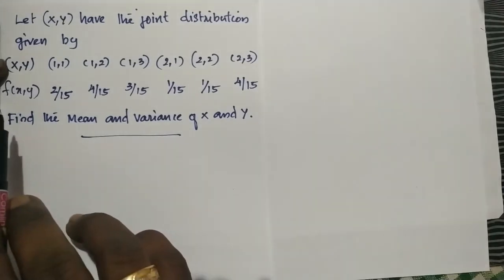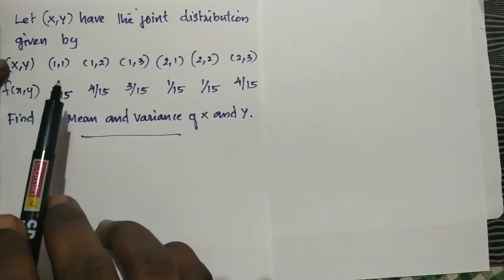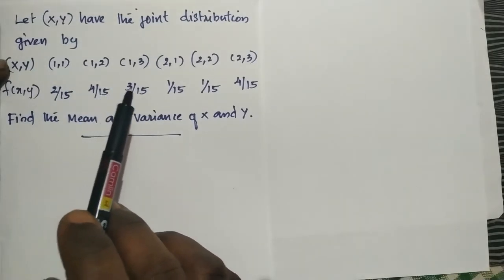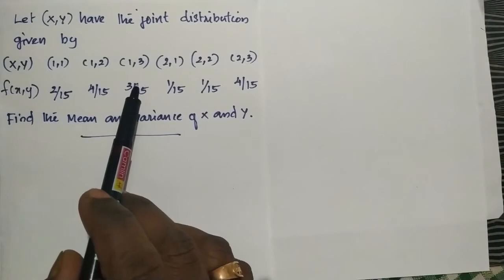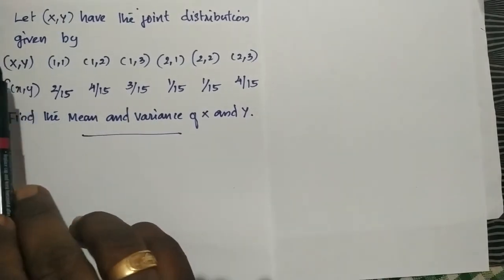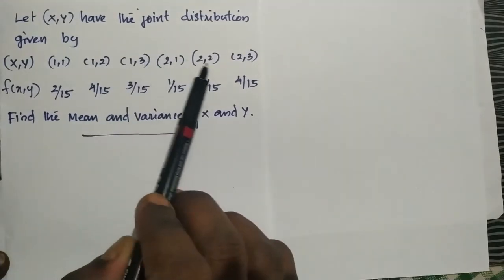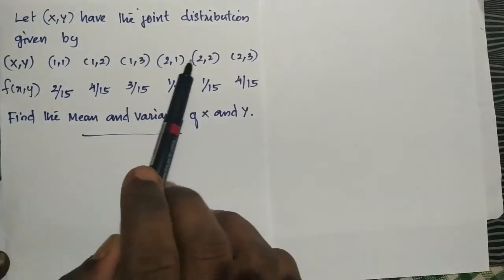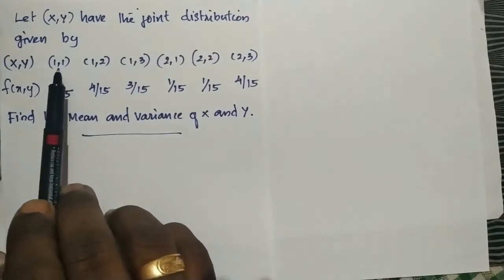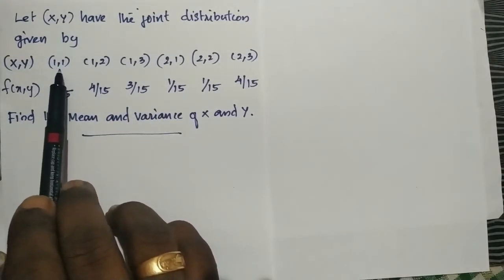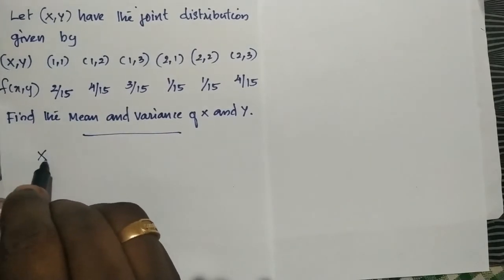Now we will find the joint distribution. XY and Y are the values separate to the discrete distribution. So we will arrange the table. X takes the same values and Y takes the same values 1, 2, 3.